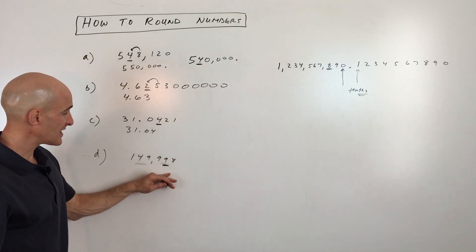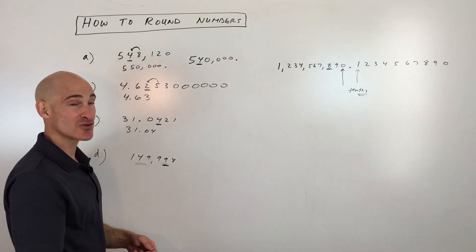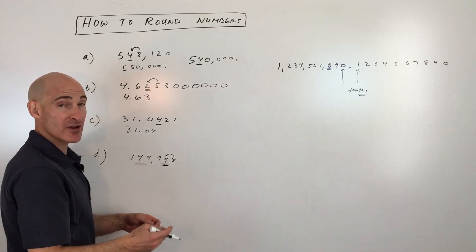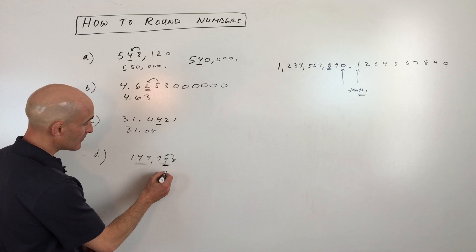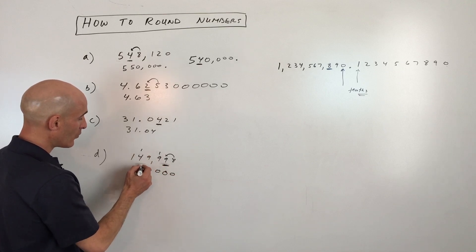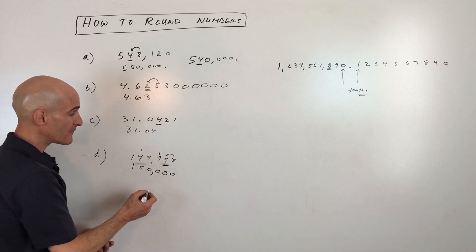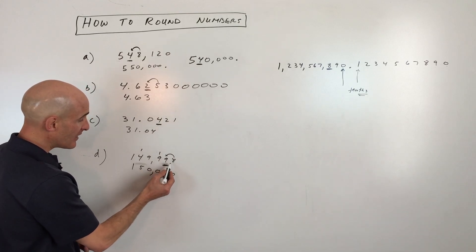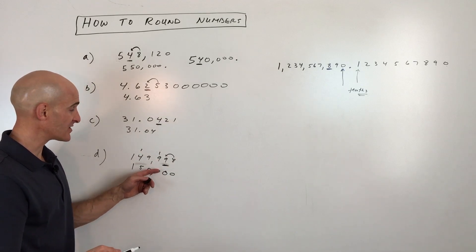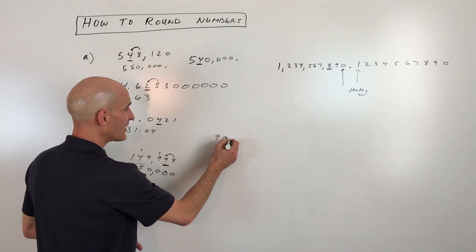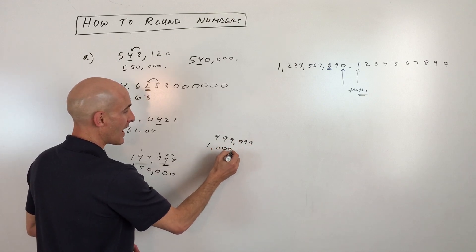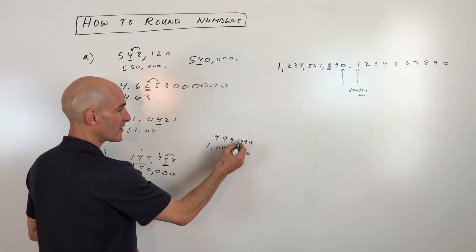Last example: 149,998. We want to round to the thousands place. One digit to the right is an eight — five or more — so we round up. But rounding up a nine gives ten, so that digit becomes zero and we carry the one. That nine also becomes ten, carry the one again, and the four becomes five. The result is 150,000. This is just like an odometer rolling from 999,999 to 1,000,000 — each digit carries over to the next.